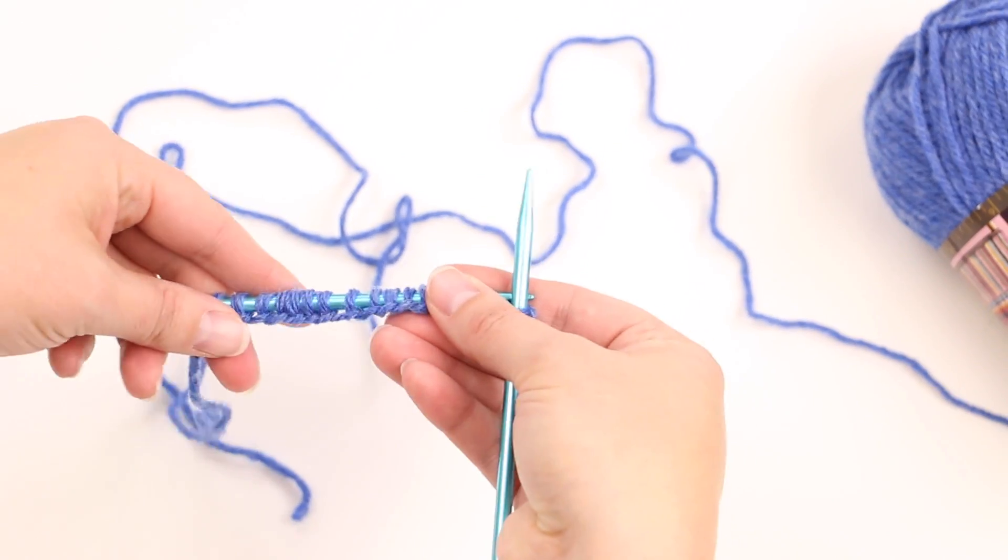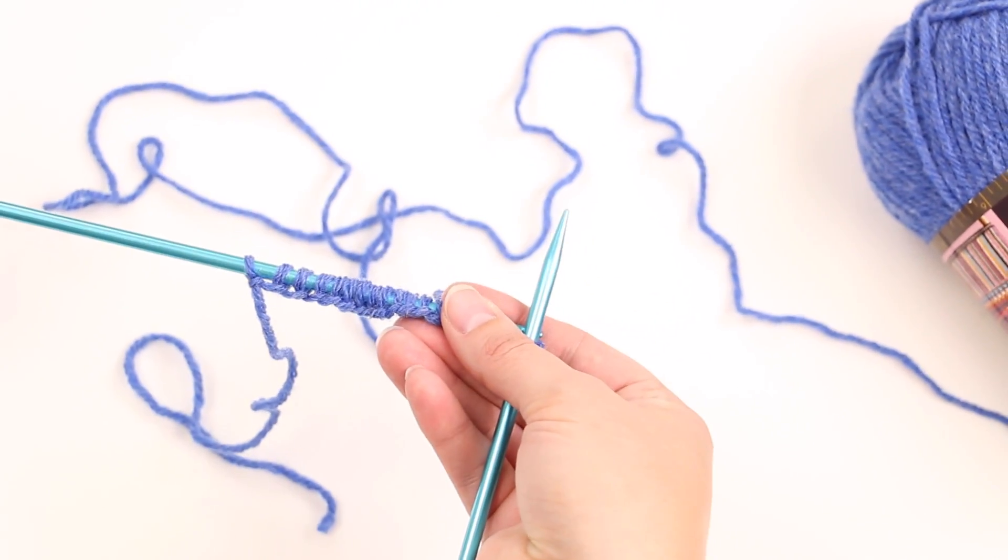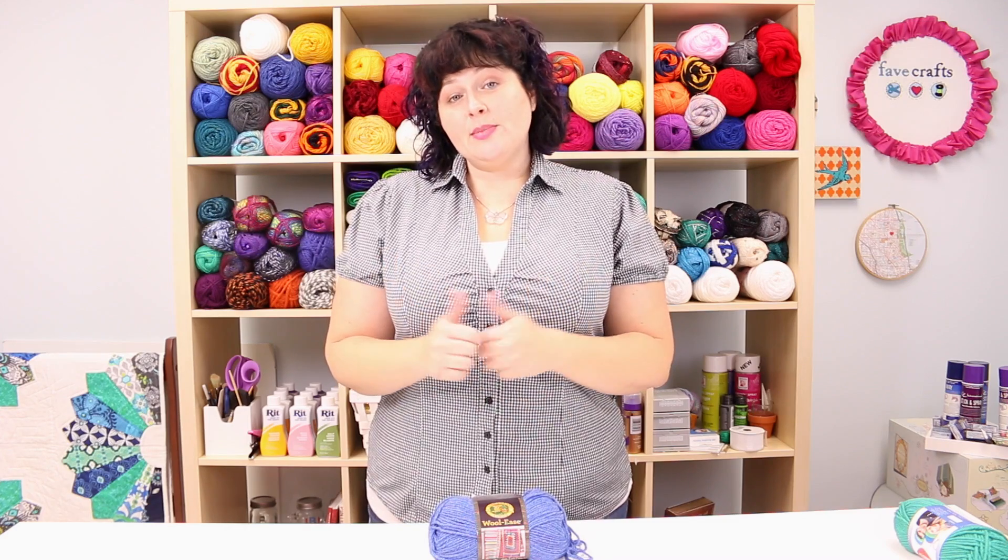And you have just learned the basic cast on. Okay everybody, so I've showed you how to do your backward loop cast on or your basic cast on. I will have everything you need down in the description bar about the yarn and everything you need. Please give us a thumbs up if you like the video. Leave us a comment, tell us what you'd like to see in the future, and I will get those videos up for you shortly. See ya!